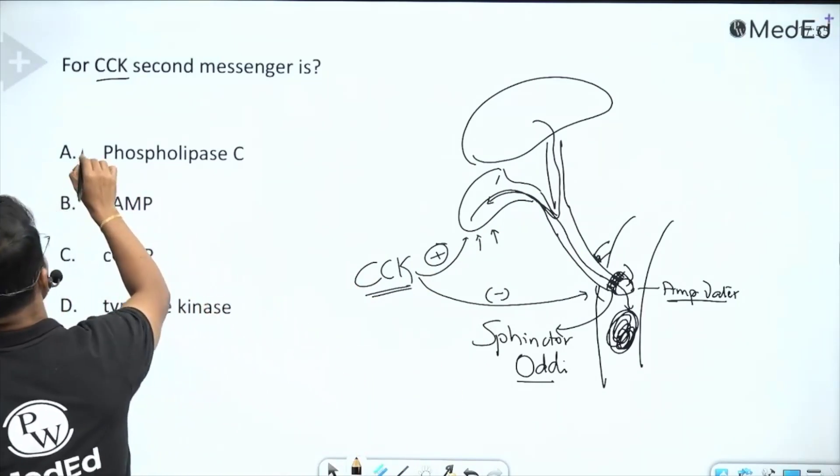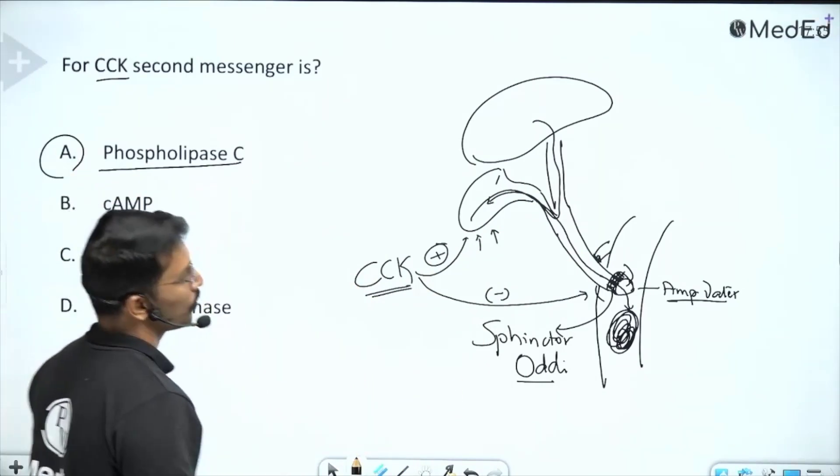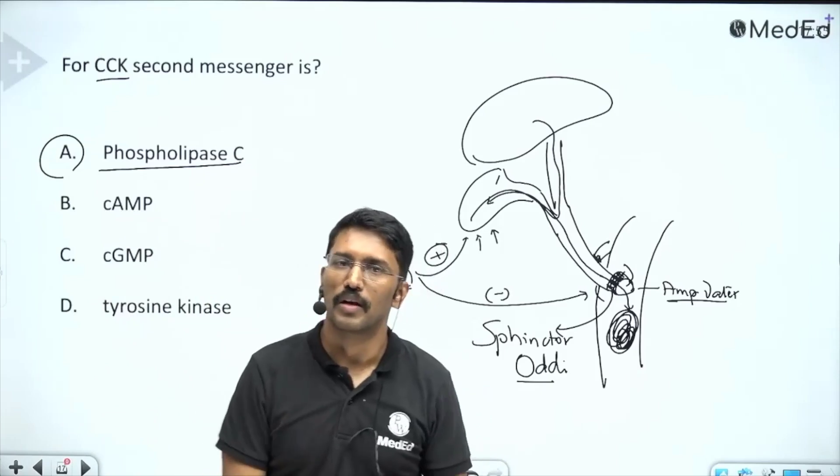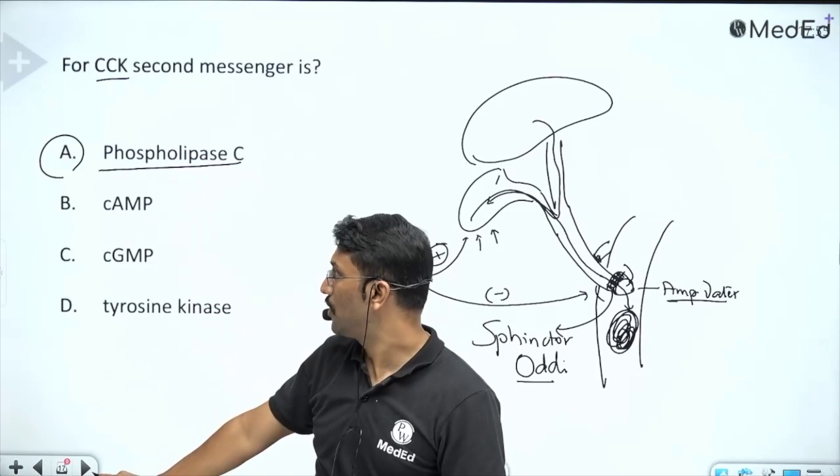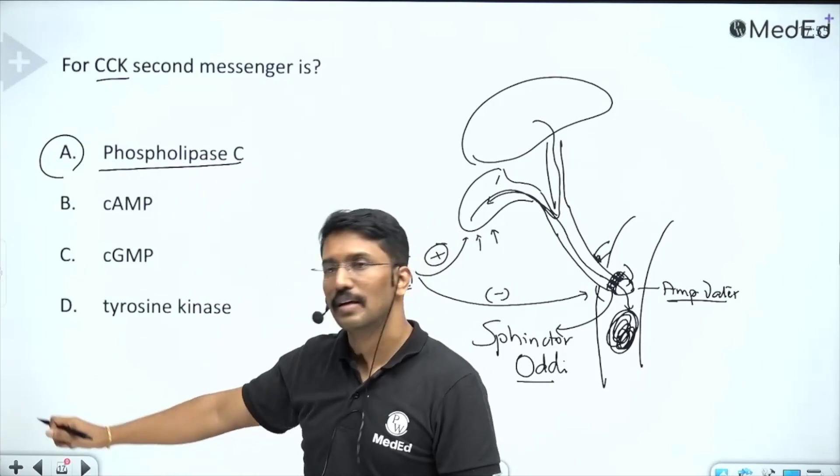The second messenger that it is using is phospholipase C. Remember that the receptor will be a G protein-coupled receptor and the second messenger system will be phospholipase C.